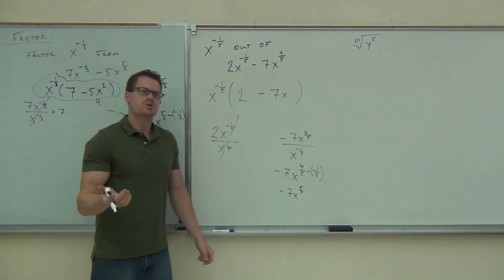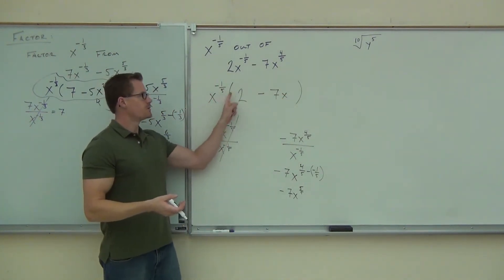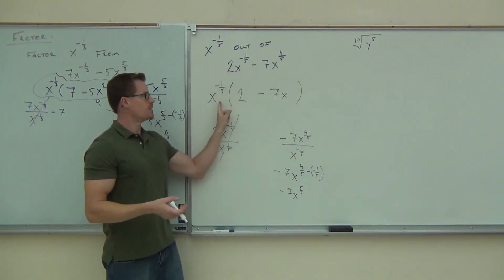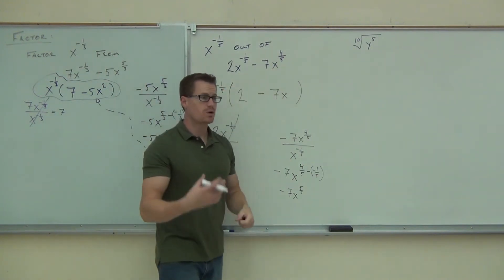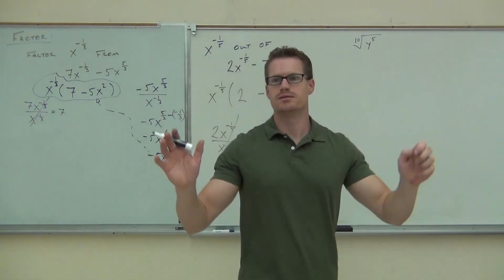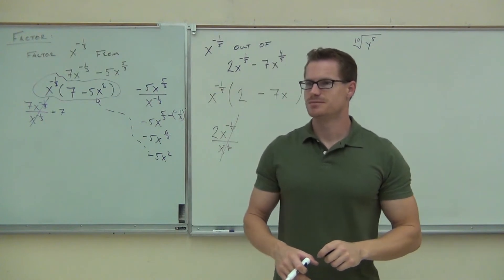If you want to check out the distribution, you can do it. Two x to negative one-fifth, that's that. Minus seven x to the, this is five-fifths minus one-fifth, that's four-fifths. So it still works with the whole distribution checking thing.